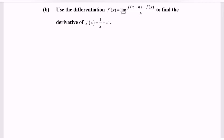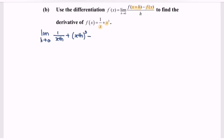Kindly substitute the function into the formula. So: limit as h approaches zero of f(x plus h), meaning we substitute x plus h into each part — giving 1 over (x plus h) plus (x plus h) to the power of 3, minus f(x), which is 1 over x plus x to the power of 3, all over h.